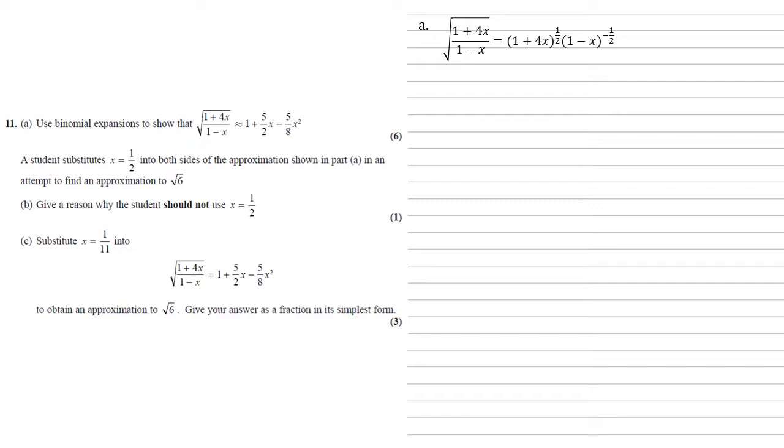So let's start with 1 plus 4x to the half. Using our formula we get 1 for the first term. Our second term is our power of a half times by the 4x. And our third term is the power of a half times by the power minus 1, so minus a half all over 2 times by the square of 4x. Simplifying this gives us 1 plus 2x minus 2x squared.